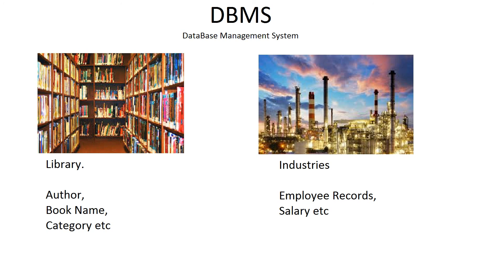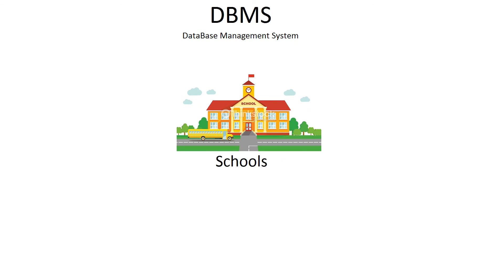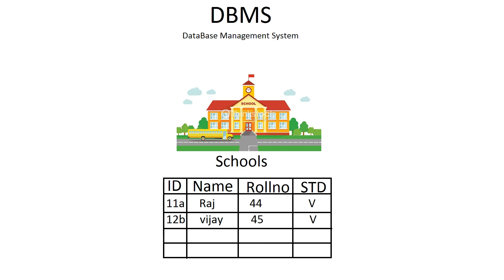This data is generally stored in table form. For example, look at a school. We need to store and retrieve details of students in schools. So here we have to store the following data: the ID of a student, their name, roll number, and standard. So it will look like the following table when stored in the database.